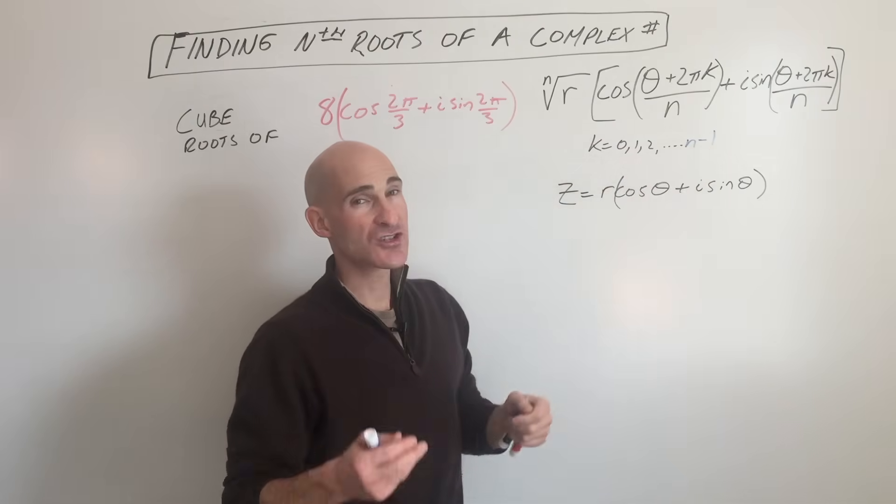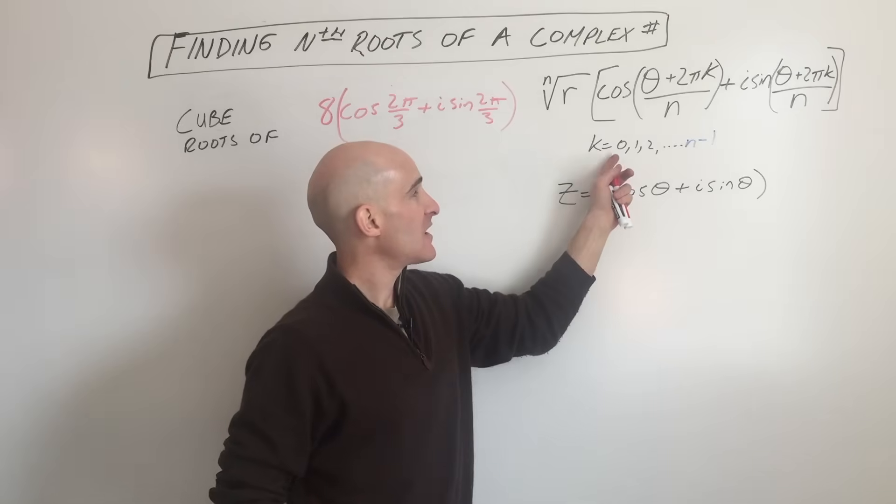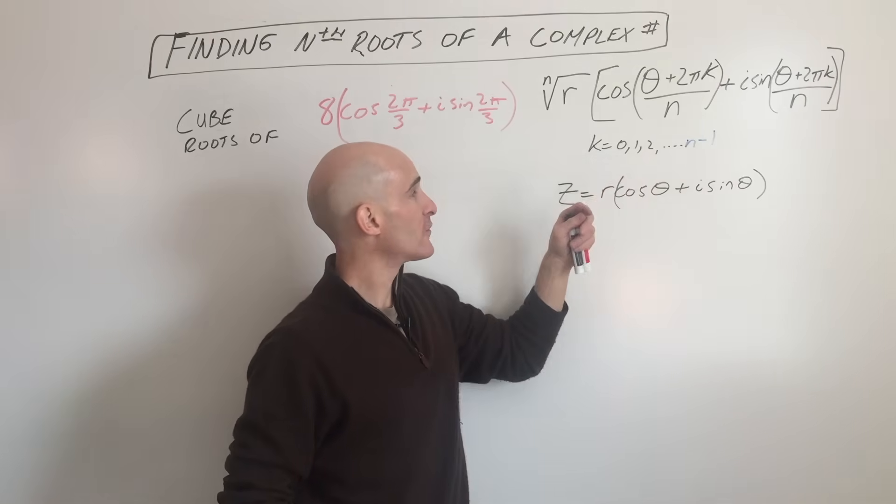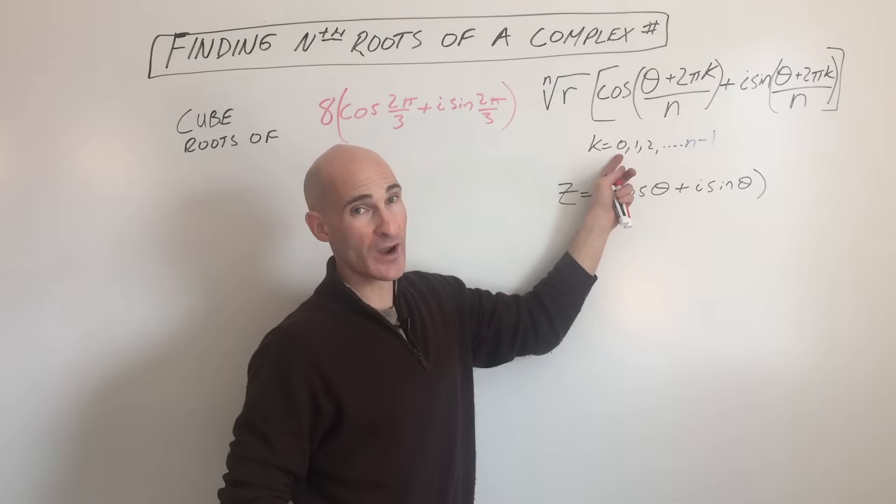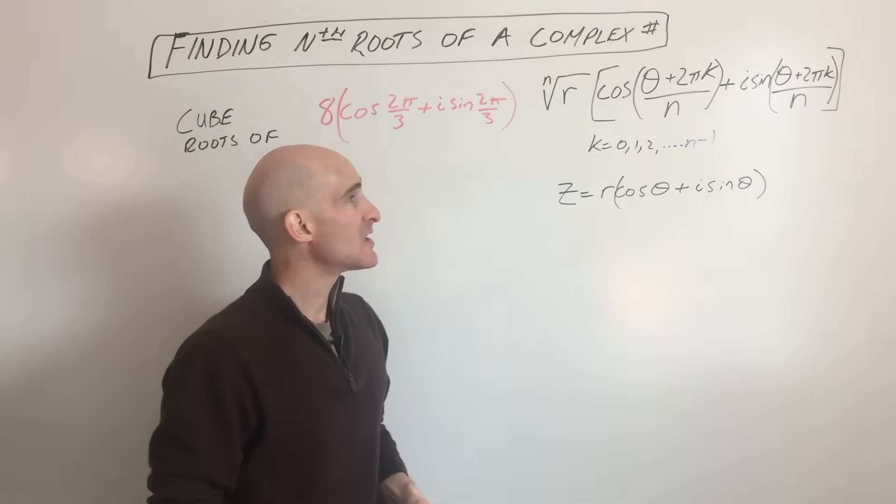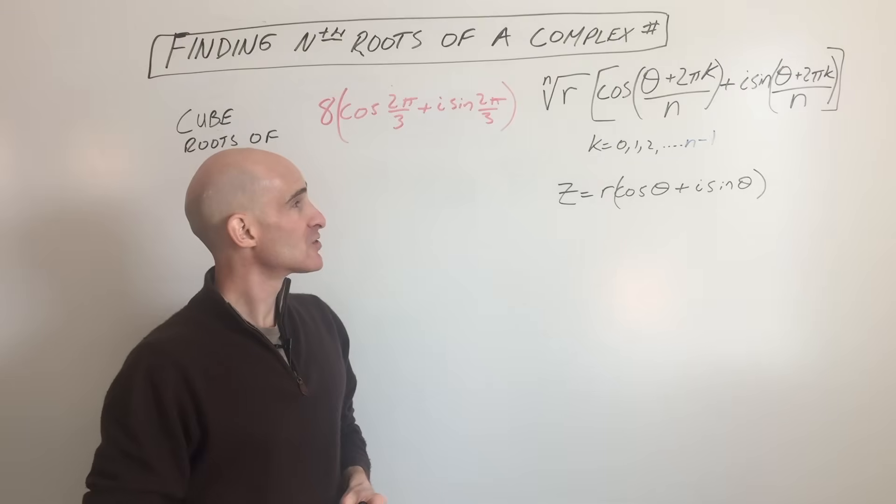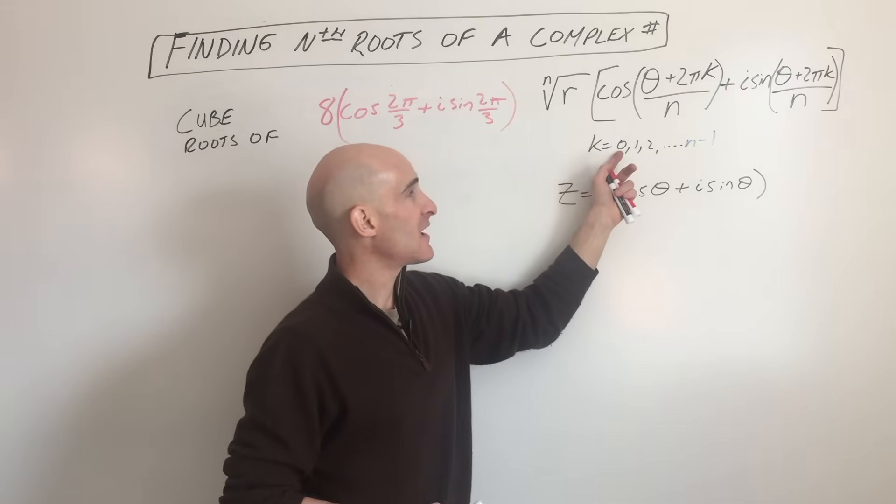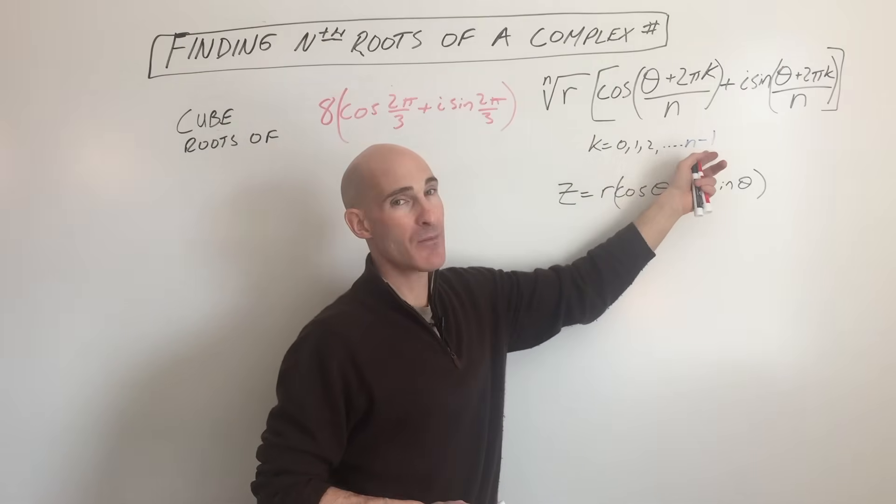So if you're taking the cube root, you're actually going to get 3 answers. k is going to be 0, 1, and 2. If you're taking the fourth root, there's going to be 4 answers, and it's going to be 0, 1, 2, 3. So whatever root you're taking, you're going to get that many solutions. And you're going to start at the k value 0, 1, 2, all the way up to n minus 1.